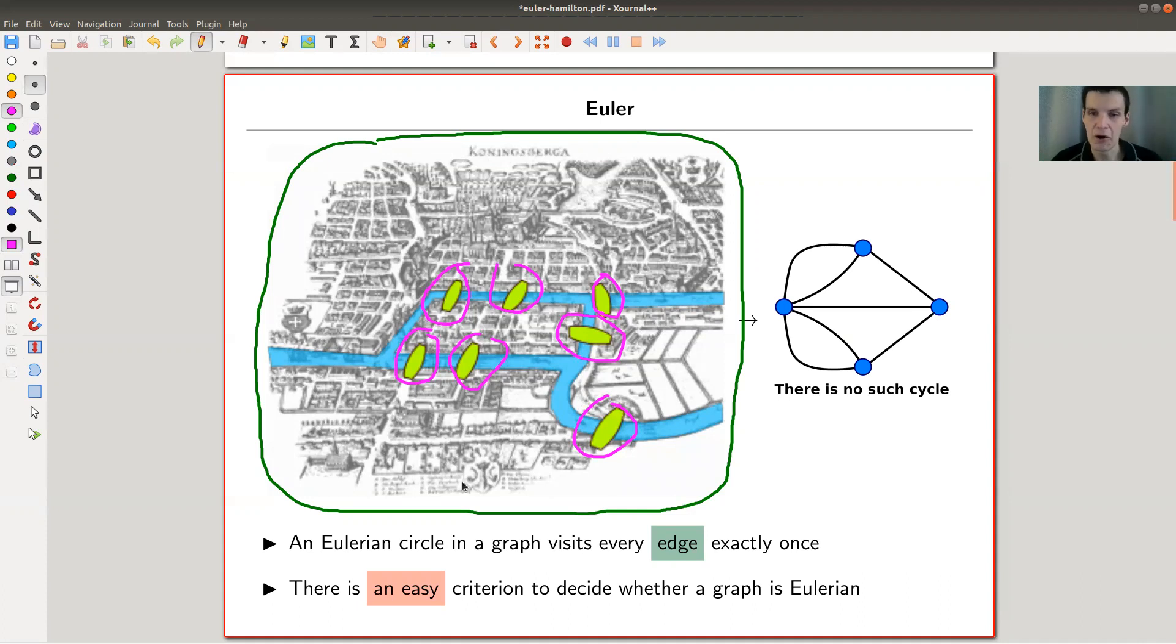Euler says, okay in order to solve this puzzle I don't care that it's taking place in Königsberg, I don't care that it's about bridges. I will draw a vertex for each of those island type things and I connect vertices if there's a bridge between them and I come up with what is nowadays called a graph.